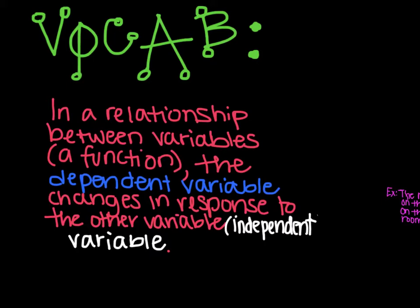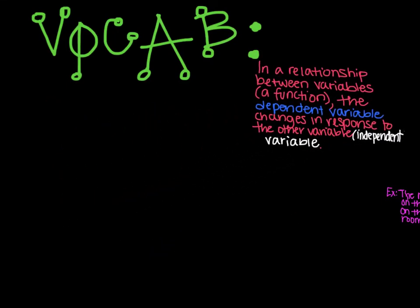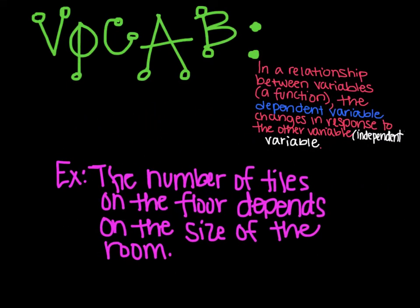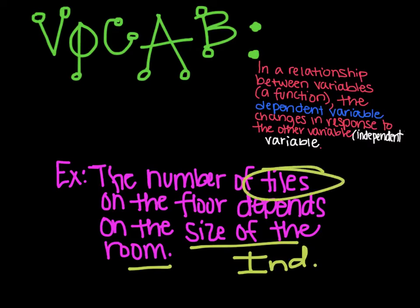In other words, the independent variable stands all by itself. The dependent variable changes because it relies on what is happening for the independent variable. An example for that: the number of tiles on the floor depends on the size of the room. Because it depends on the size of the room, the size of the room is our independent variable, and then the number of tiles would be our dependent variable.